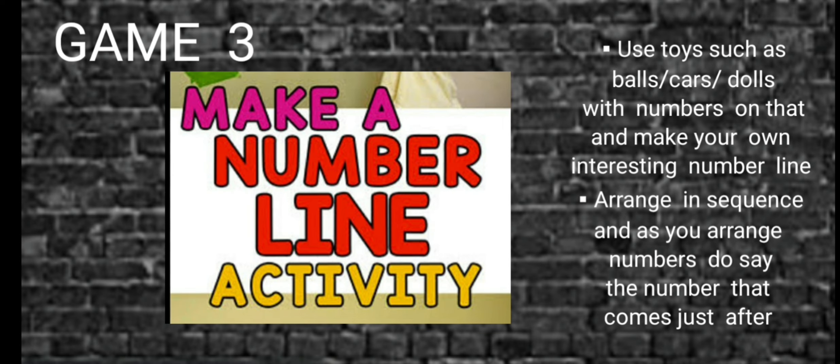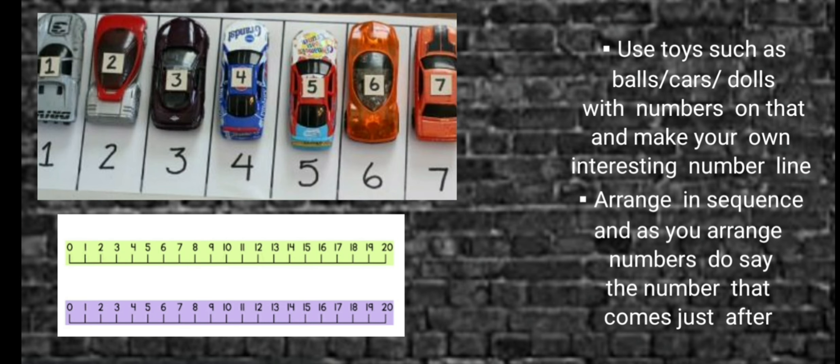Now let's talk about our game number 3. And that involves taking out all the toys from your box and arranging them in a sequence and making an interesting number line using these toys. For each toy, you must have a number on it. Be it 0, 1 or 20. Each toy must have a number.